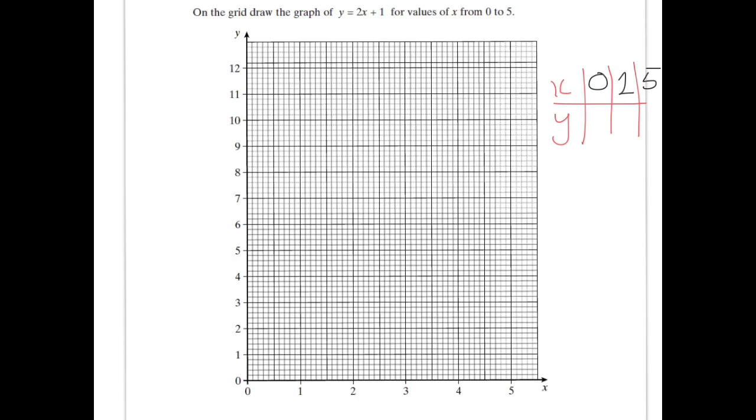So having done that, let's look at our formula. y equals 2x plus 1. And when x is 0, 2 times 0 is 0, plus 1 is 1. And so when x is 0, y is 1. That's the point 0, 1. When x is 0, y is 1.